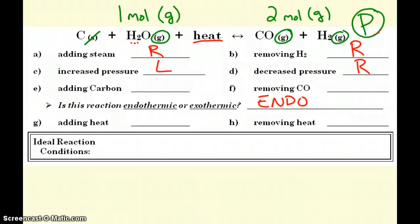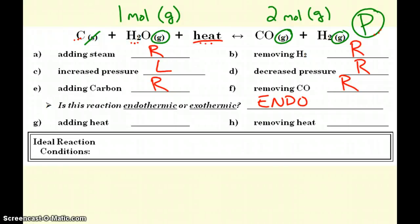Adding carbon — send it to the right. It's an ingredient, that makes sense. Remove carbon monoxide — that's a product — taking it away causes a shift to the right to make more. Heat: this time, since it's endothermic, when I add heat, send it to the right. Removing heat would cause the reaction to come back to the left.